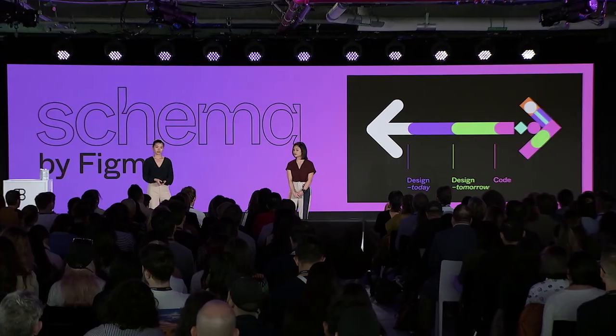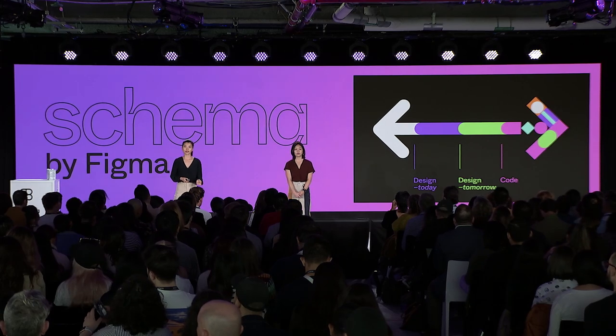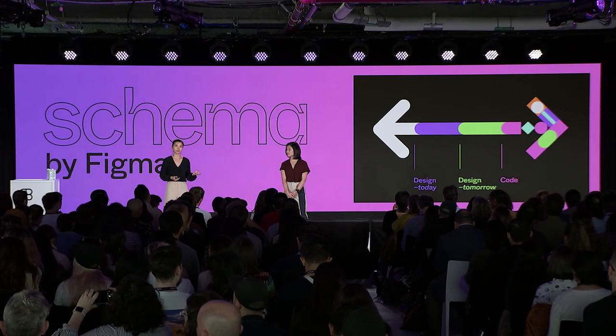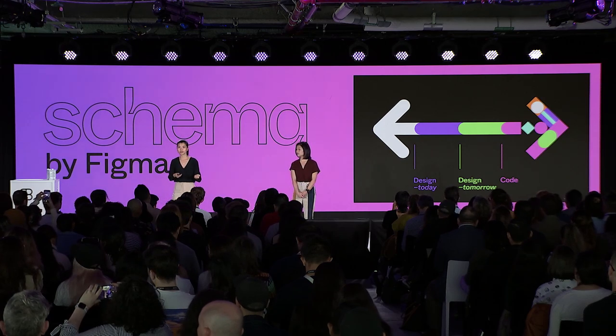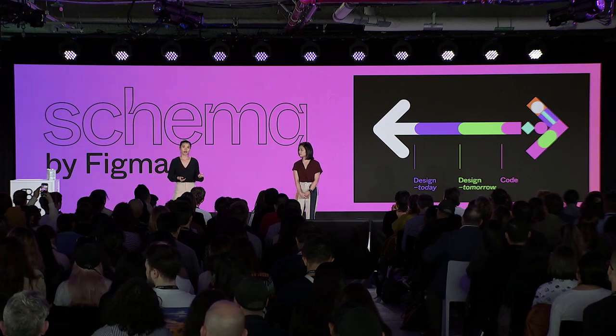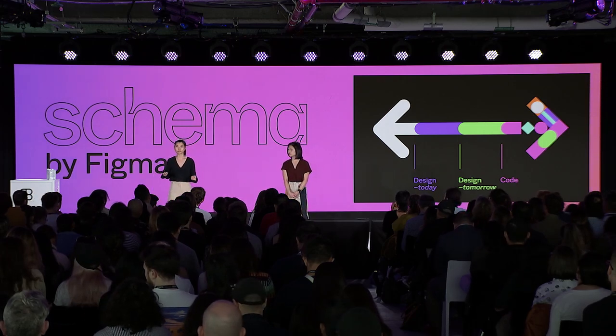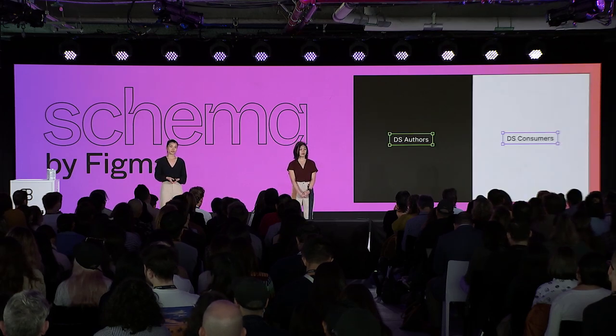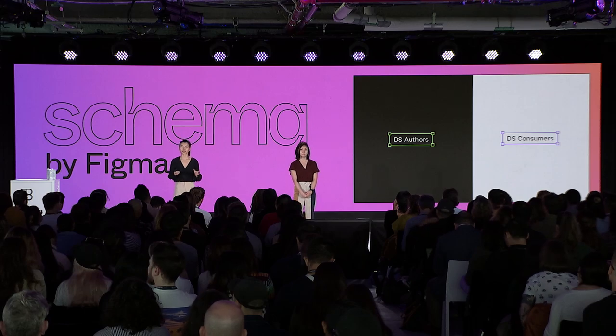We also wanted to consider the direction in which design and collaboration are trending. As design systems mature and designers work more closely with developers, we're seeing Figma components start to become more complex, mirroring the complexity of code components. So could this new feature help align design components more simply with code components?